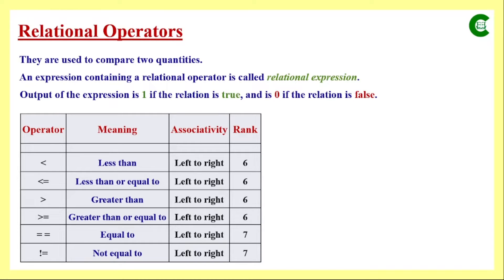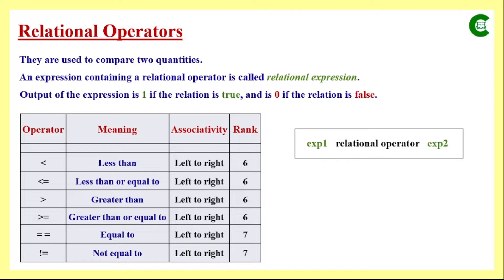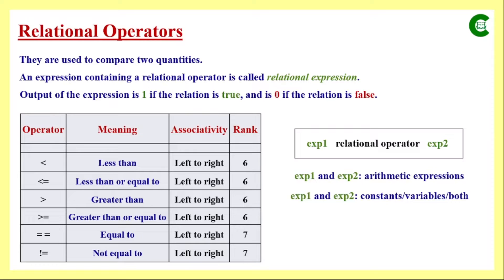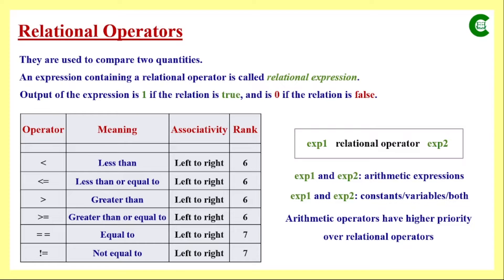All relational operators are processed from left to right. This is the syntax of using a relational operator: on both sides we have expressions — constants, variables, or both. From the class on arithmetic operators, we know that multiplication, division, and modulo division have rank 3, and addition and subtraction have rank 4. This means arithmetic operators always have higher priority over relational operators. So in a single expression, arithmetic operations are processed first, then relational operations.